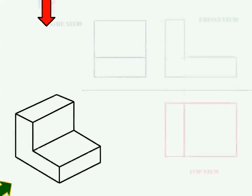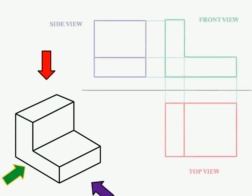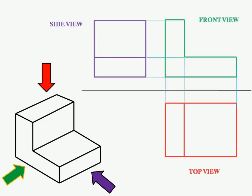Orthographic projection is a method of presenting a 3D object on a 2D plane using two or more views.